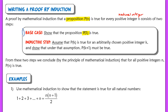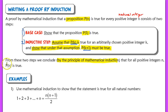The inductive step is where you assume that P of k is true for any arbitrarily chosen positive integer k. In other words, once we get to a rung, we show that P of k plus 1 must also be true — we can get to the next rung. Then from those two steps, we conclude by the principle of mathematical induction that for any positive integer n, P of n is true.